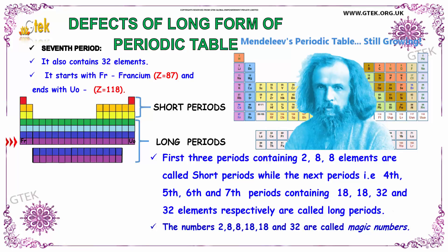The numbers 2, 8, 8, 18, 18, 18, and 32 represent the maximum electrons in the orbitals. These are considered as magic numbers.